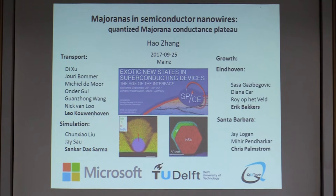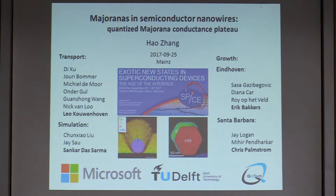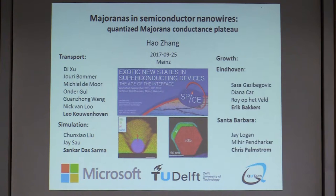All the good results we can get are due to the good interface between superconductor and semiconductor, and all the bad results are because we originally had very bad interfaces. The transport was done in Delft with four PhD students — Doru, Yuri, Michiel, and Ander — and two master students, Guan and Nick. The theory simulations were done in collaboration with the Maryland group, Tewari's group. Our nanowires were grown by Eindhoven team and Santa Barbara team — Eric Bakker's team and Chris Palmstrom's team. We are funded by Microsoft StationQ.